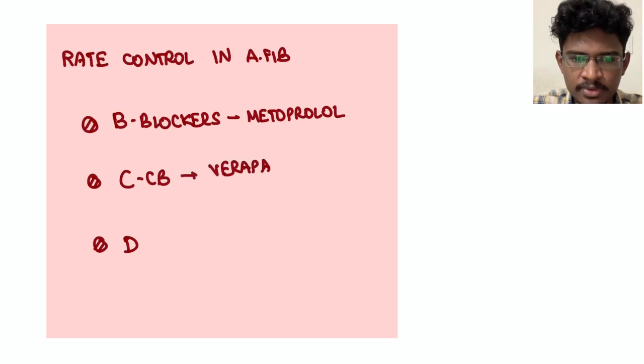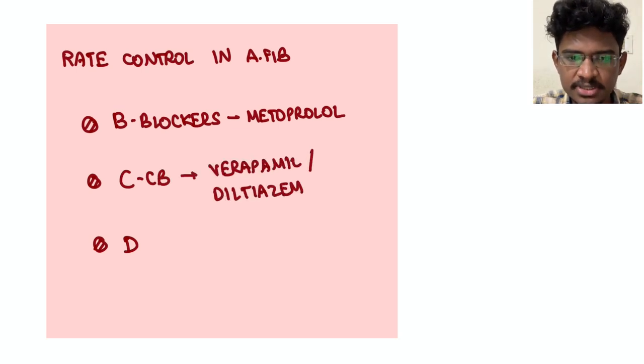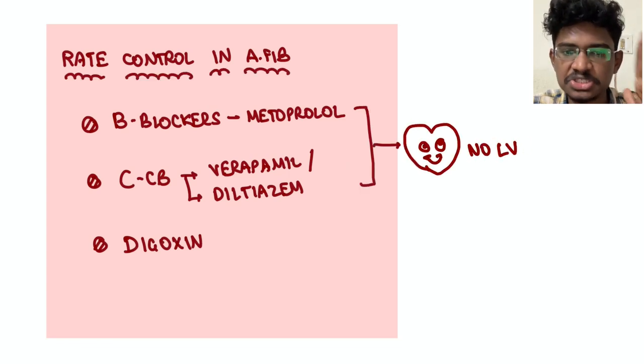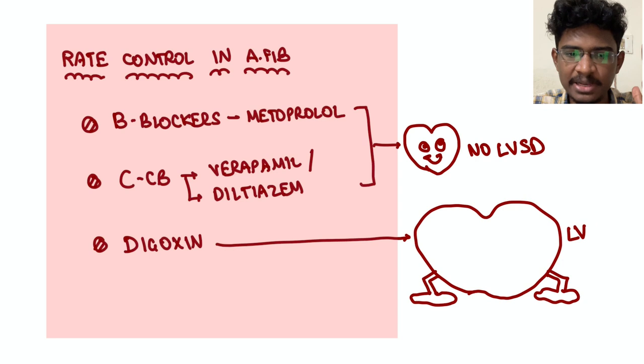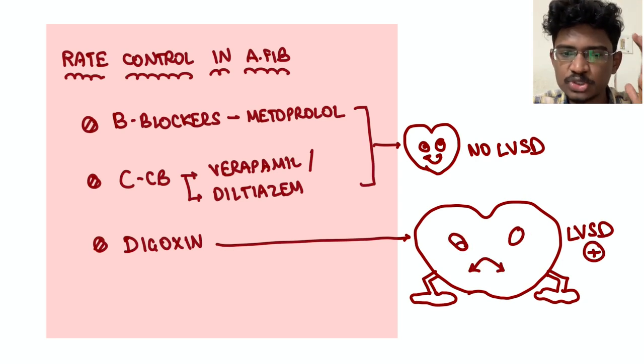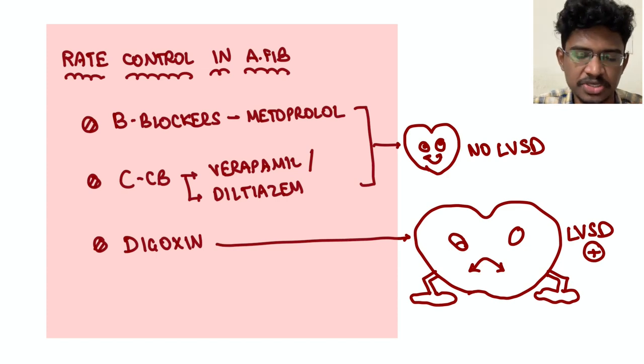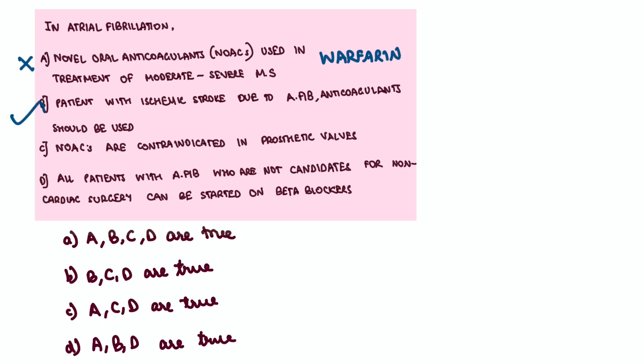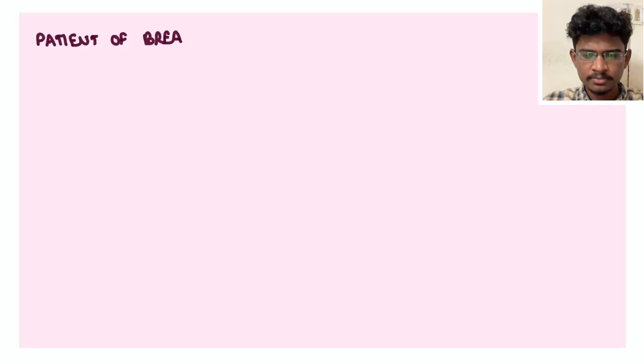When you should give? Check for the heart functions. If there is no LVSD, meaning left ventricular systolic dysfunction is not there, then you can happily give beta blocker or calcium channel blocker. If there is left ventricular systolic dysfunction, then you should go for digoxin. So the question asks about those who are the candidates for non-cardiac surgery, meaning their heart is working fine, so there you can give beta blockers.